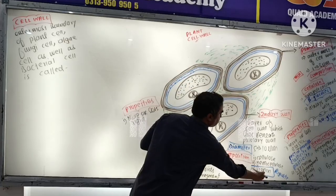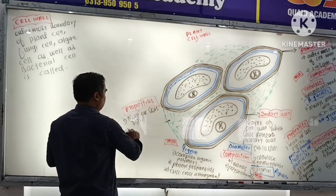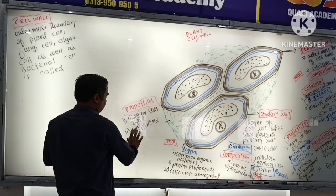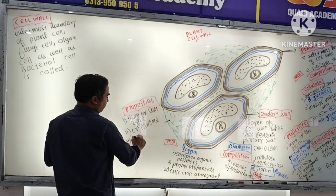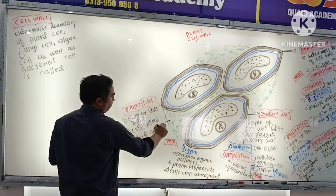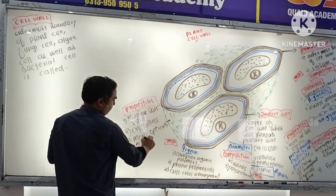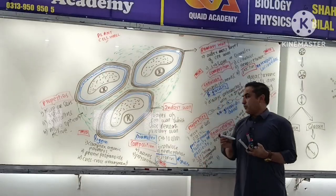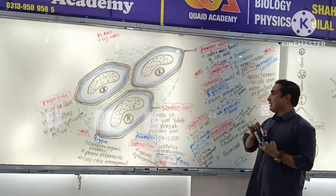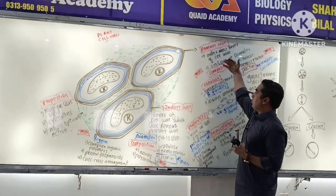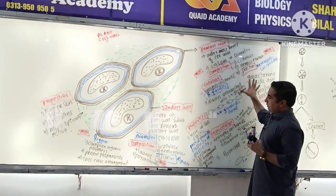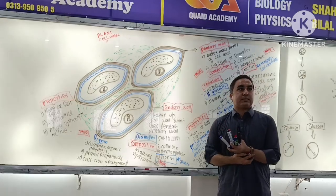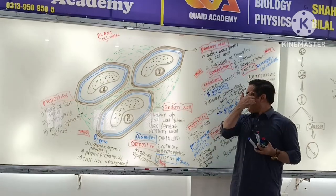To summarize: the primary wall is more or less elastic and crystalline and optically active. The secondary wall is more or less rigid and crystalline and more optically active. These are the three classes - primary, secondary, and middle layer - which are very important. Thank you.